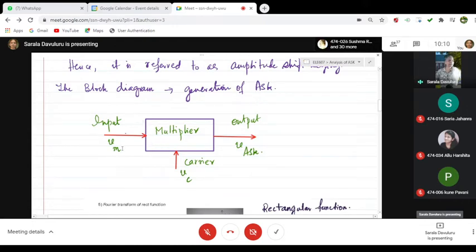What do you have? You have an input modulating signal, a carrier signal, a multiplier signal, and these two get multiplied and what you get at the output is ASK that is amplitude shift keying. This is the block diagram.